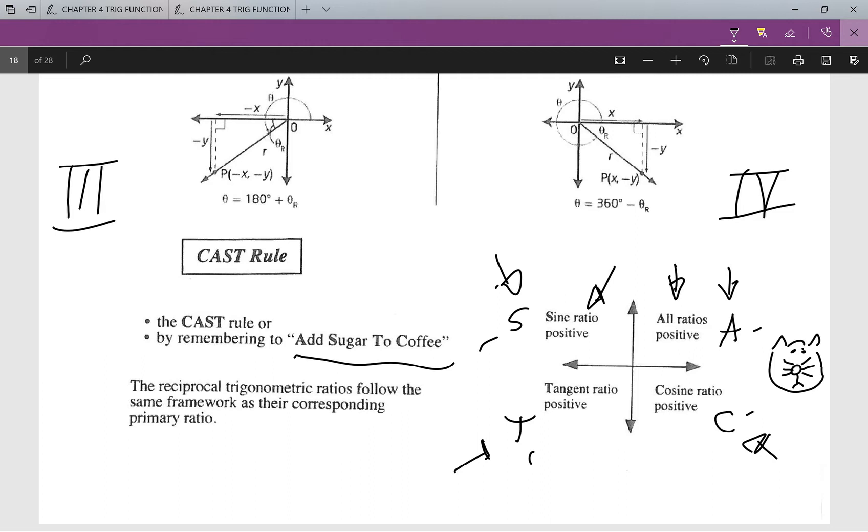We look at the tangent ratio positive right here. That means tan is the only thing positive in this quadrant, so tan and cotan are positive and the rest are negative.